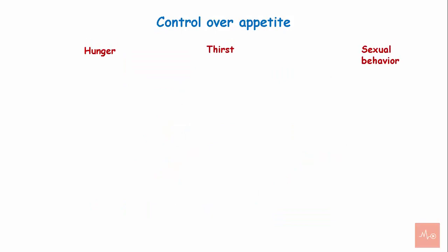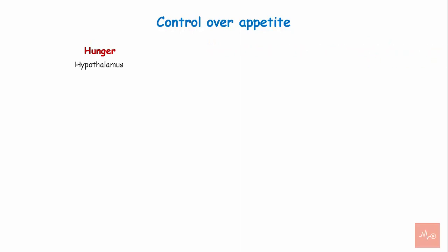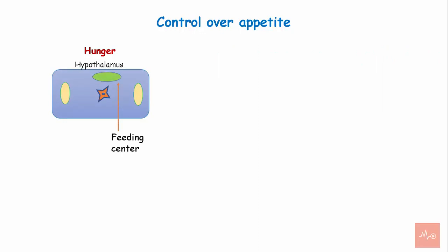Control over appetite. The hypothalamus controls appetite, which involves hunger, thirst, and sexual arousal. Regarding hunger, the hypothalamus has control over it via two centers: the feeding center and the satiety center. The feeding center is located in the lateral nuclei, whereas the satiety center is located in the ventromedial nucleus.